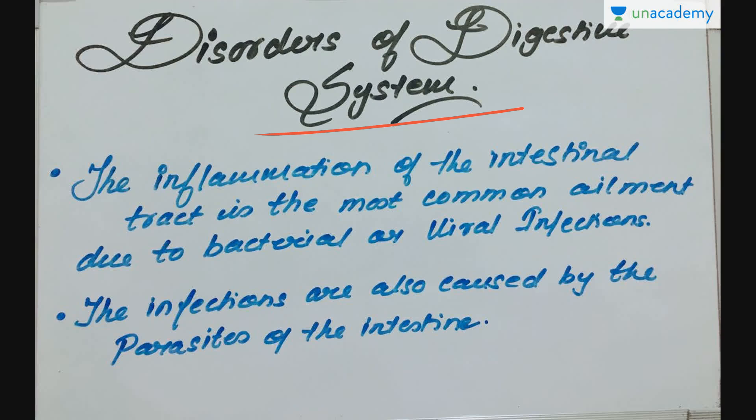The inflammation of the intestinal tract is the most common ailment due to bacterial or viral infections. The infections are also caused by parasites of the intestine like tapeworm, roundworm, threadworm, etc. Now let us discuss some of the disorders of the digestive system in brief.